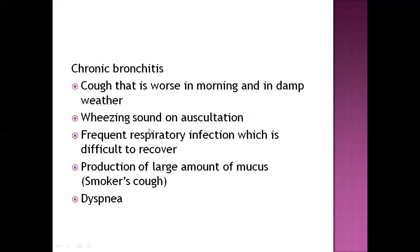Symptoms of chronic bronchitis are similar but the cough is worsened. It is worse in the morning and also worse in damp weather. There is wheezing sound on auscultation and frequent respiratory infections which are difficult to recover from. A large amount of mucus is produced — called mucus cough — which can be visualized through X-ray. There is also dyspnea in chronic bronchitis.